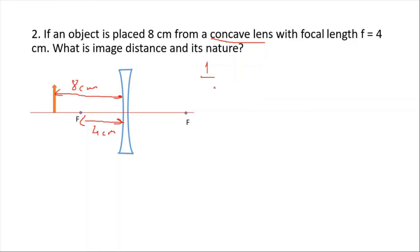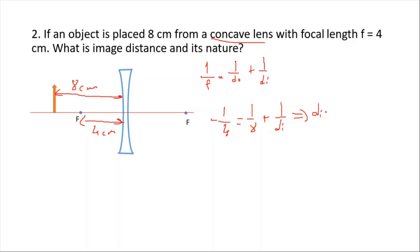Using our formula 1/f = 1/d_object + 1/d_image, and since this is a concave lens the focal length is negative: -1/4 = 1/8 + 1/d_image. After calculations, the image distance equals negative 8/3 centimeters.